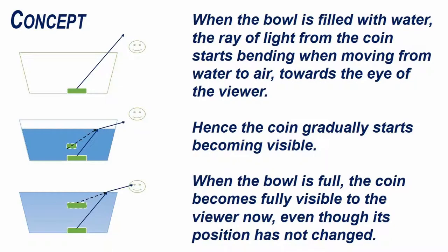When the bowl is filled with water, the ray of light from the coin starts bending when moving from water to air, towards the eye of the viewer. Hence, the coin gradually starts becoming visible. When the bowl is full, the coin becomes fully visible to the viewer, even though its position has not changed.